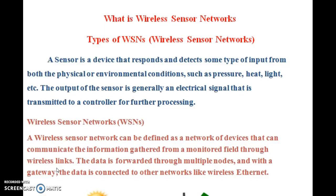First of all, a question arises: what is a wireless sensor network and what is a sensor? A sensor is a device that responds and detects some type of input from physical or environmental conditions such as pressure, heat, light, etc. The output of the sensor is generally an electrical signal that is transmitted to a controller for further processing.